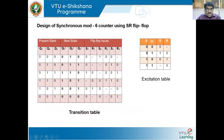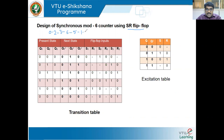Next, same sequence but we change the flip-flop to SR flip-flop. The sequence remains: 0→2, 2→3, 3→6, 6→5, 5→1, 1→0. This is a design of an arbitrary synchronous counter using SR flip-flops with this particular sequence. Note there is no 4 in this sequence, so this is strictly an arbitrary counter, not mod 6.